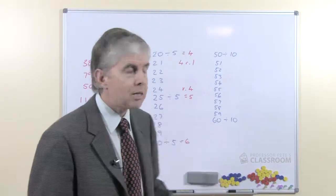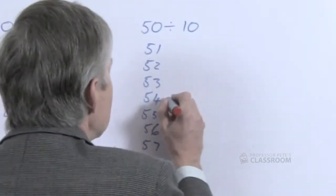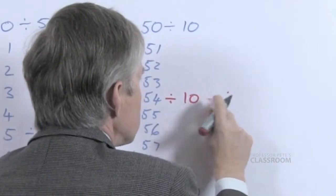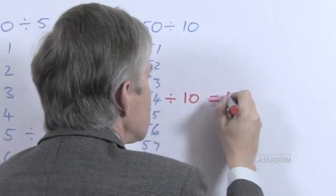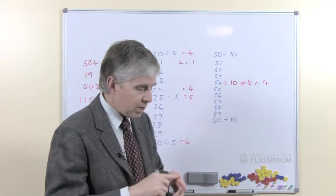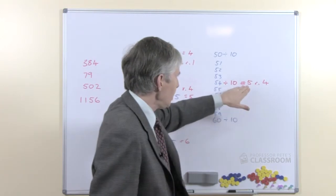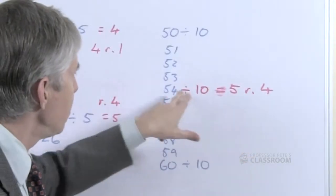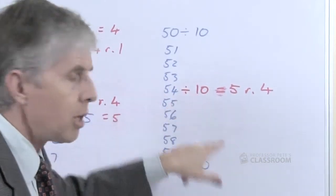What do you notice about the number that you started with? Well we started with 54, we divided by 10, the answer is 5, remainder 4. What do you see? What is the same about the answer and the question? Well we've got a 5 here and a 5 here, and a 4 there and a 4 there. Why would that be?